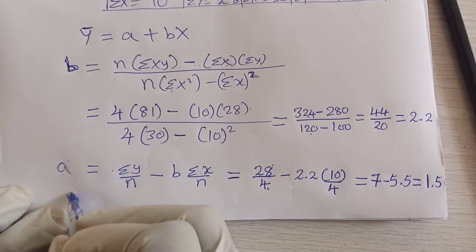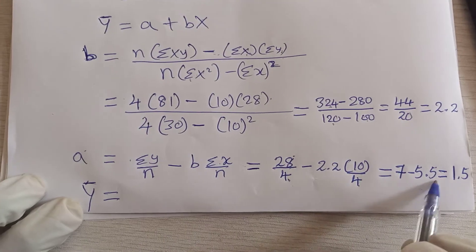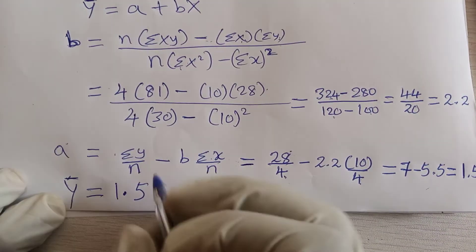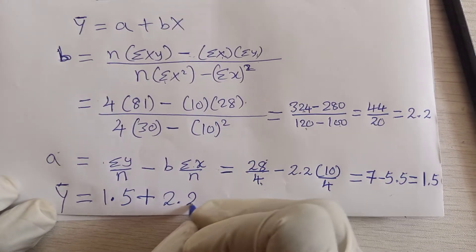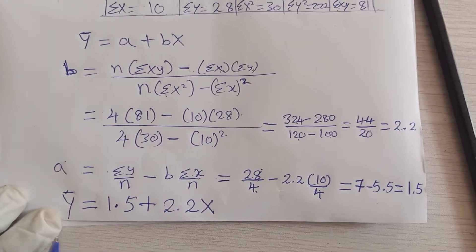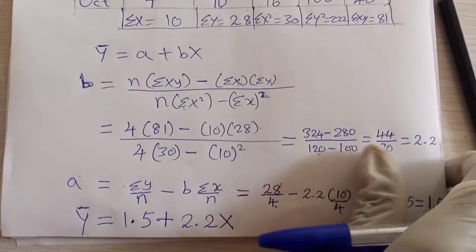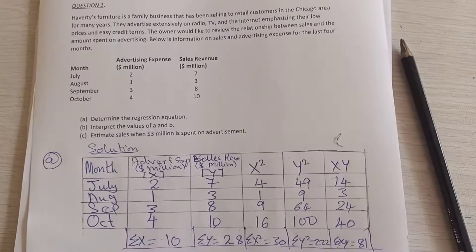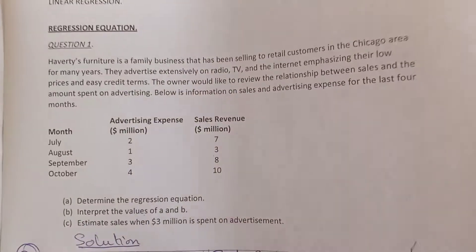So the regression equation is: ȳ = 1.5 + 2.2x. We substitute the values of a and b into the formula y = a + bx. Now let's go to question (b), which asks us to interpret the values of a and b.